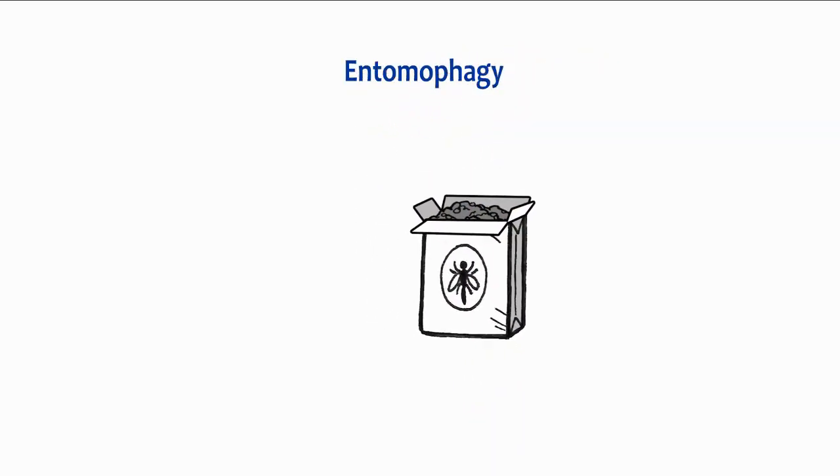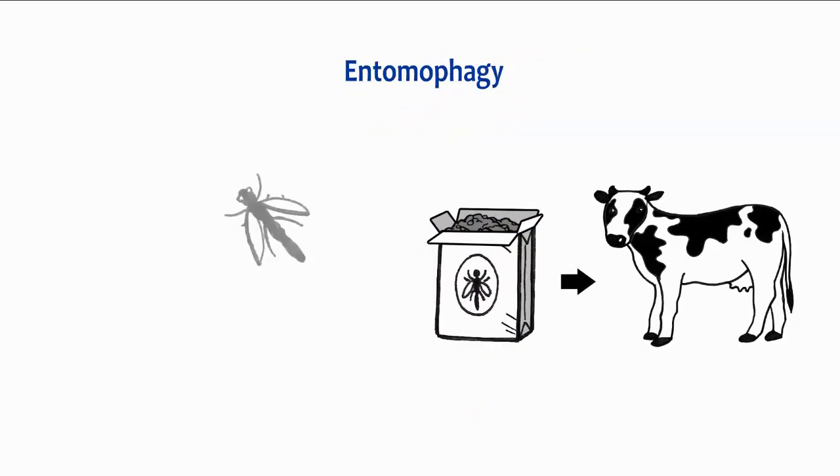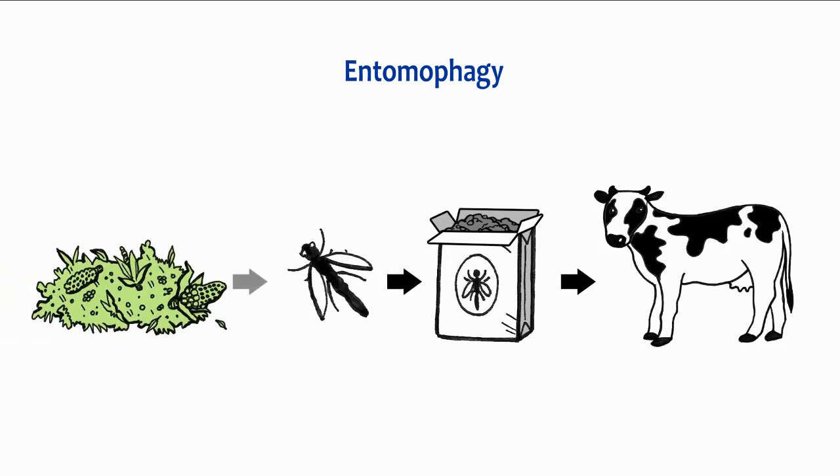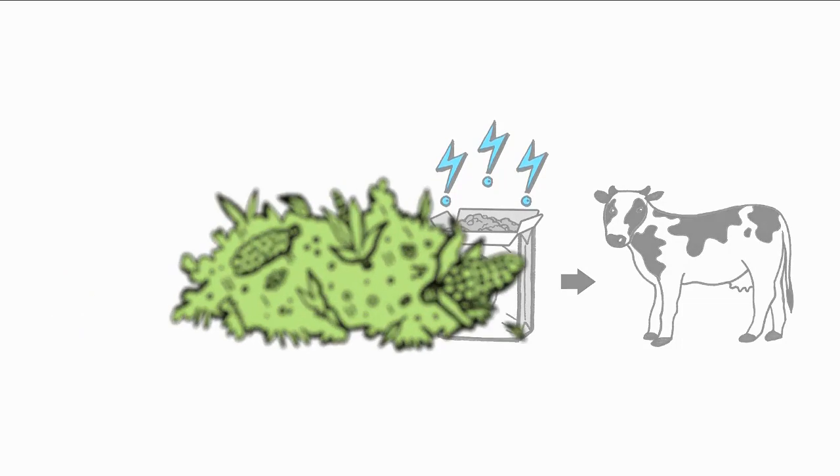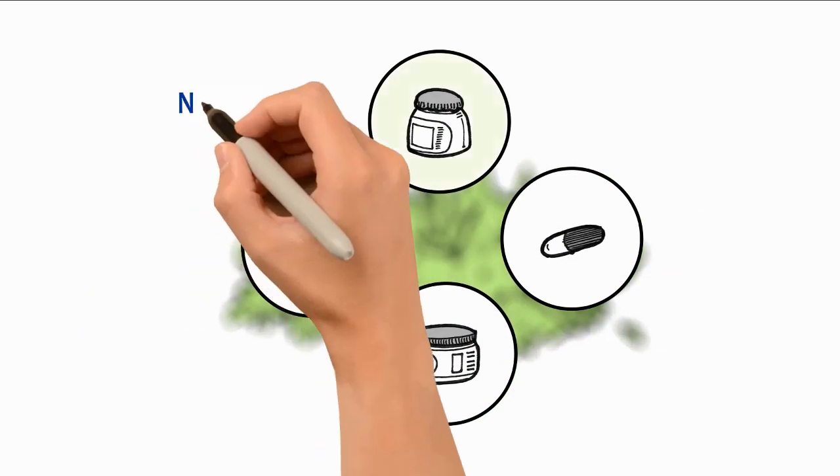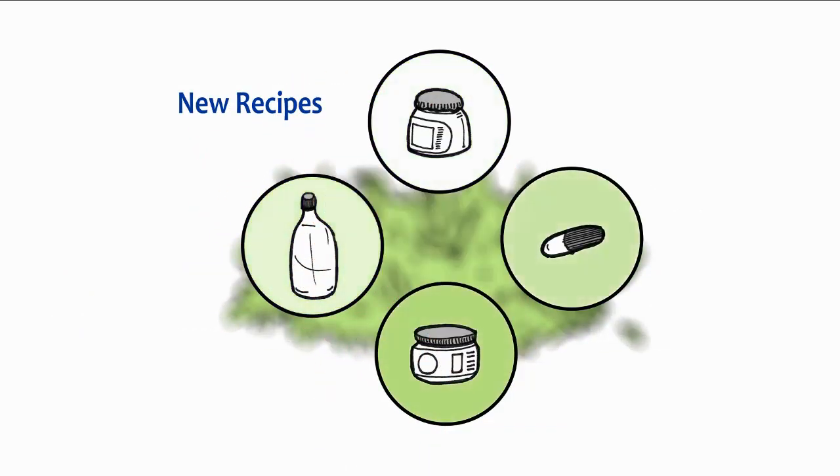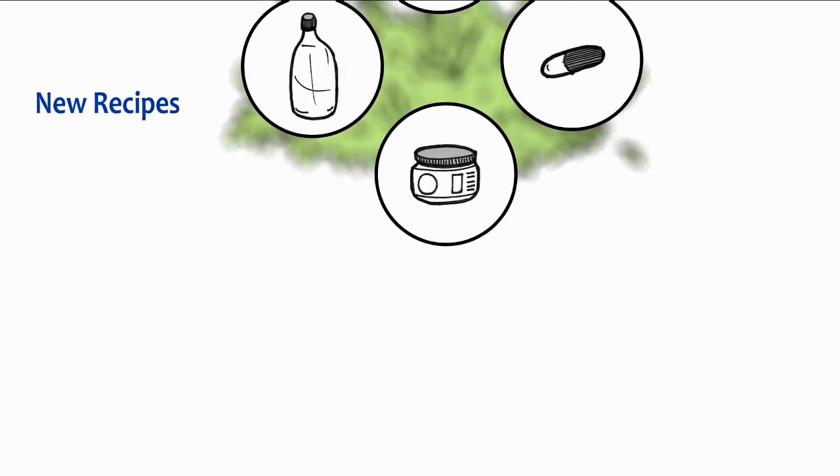entomophagy also concerns feeding insects to animals. In this sense, animal husbandry could benefit from the ability that insects have to turn low-grade food waste into valuable high-end proteins and fats. Studying processes to treat a variety of food waste and byproducts can result in attaining valuable ingredients for new recipes.